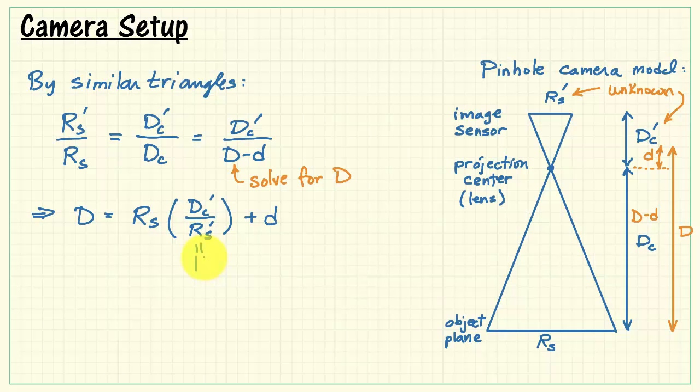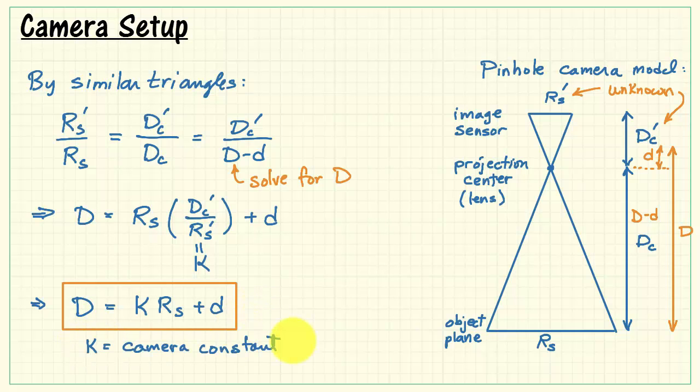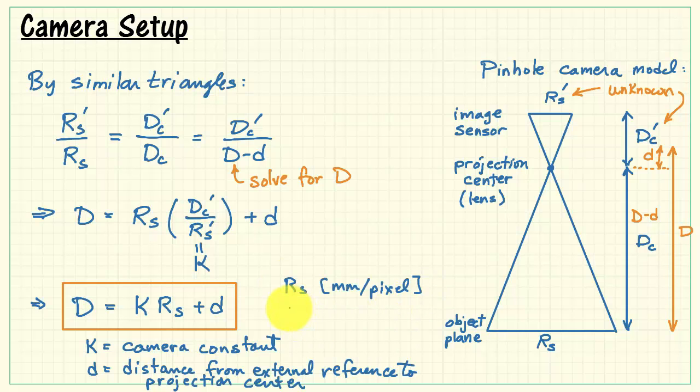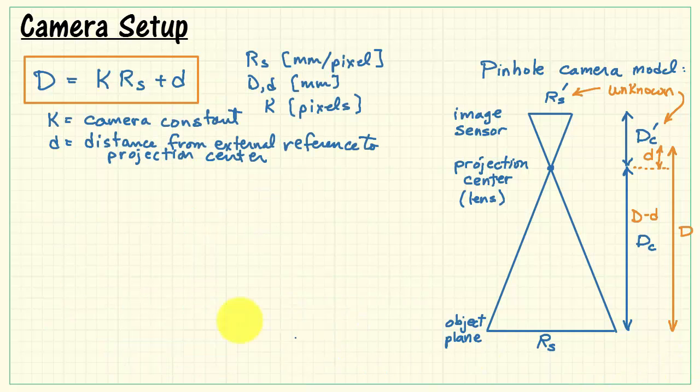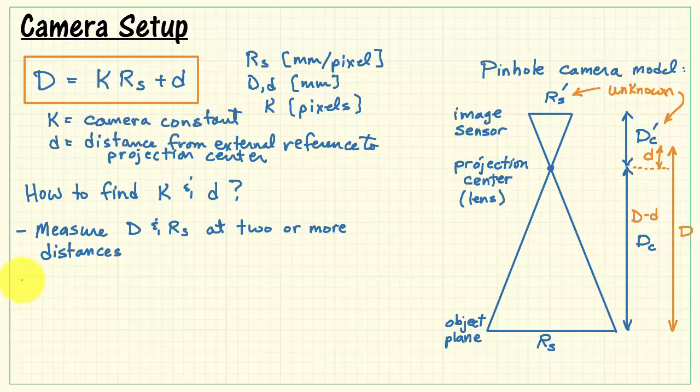Now, this ratio is composed of two values for which we do not have any information. I'm just going to represent that ratio by the so-called camera constant K. Now, looking at this basic equation, we see that little d, that's the distance from the external reference to the projection center. Capital D is the distance from the reference mark down to the object plane. Based on looking at the units here, we see that the units of our camera constant is pixels. Now, as I say, the camera constant is unknown. Also, this little d distance that's internal to the camera is also unknown.